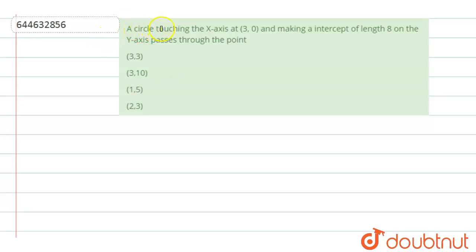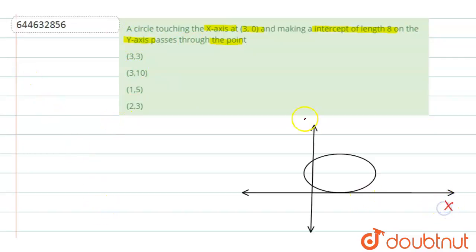The question says that a circle touching the x-axis at (3, 0) and making an intercept of length eight on the y-axis passes through which point. Let us take this as our x-axis and this as our y-axis. As given, the circle touches at point (3, 0).